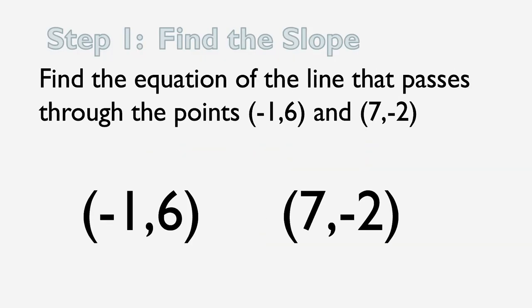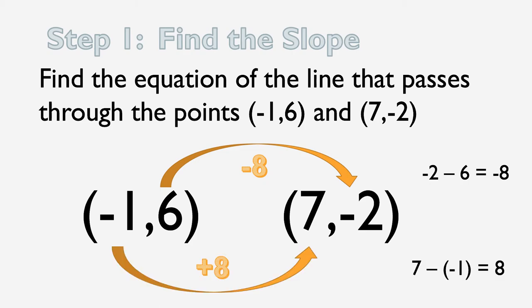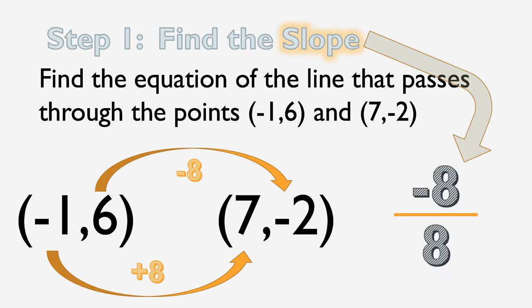So again, our first step is to find the slope. From 6 to negative 2 it goes down 8, that's the rise. From negative 1 to 7 it goes up 8, that's the run. We'll put those in a fraction, negative 8 over 8, that's the slope. But here we can simplify. So let's simplify that to just negative 1. Negative 8 divided by 8 is negative 1.